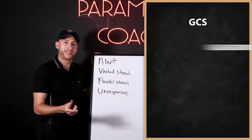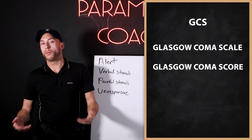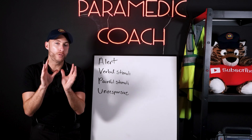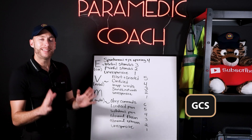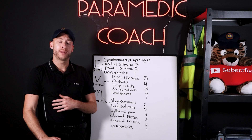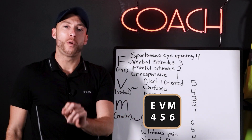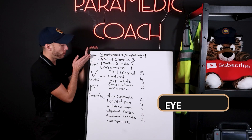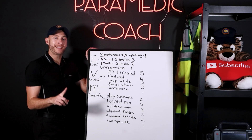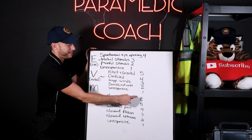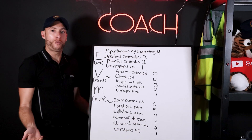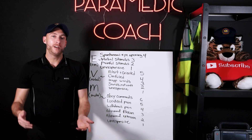GCS — the Glasgow Coma Scale, also called Glasgow Coma Score — is a more detailed assessment of mental status. This scale is based on 15 points being the best score and 3 points being the worst. The mnemonic is EVM 456: E for eye-opening, V for verbal, M for motor. The best score in each category is 4, 5, and 6 respectively, totaling 15. The minimum is 1, 1, 1, totaling 3.